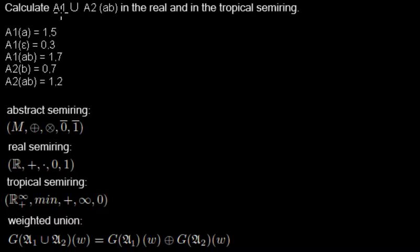In this video I'd like to show you how to calculate the weight of the word AB in the union of the two weighted automatons A1 and A2 in the real and in the tropical semi-ring, which are two different tasks actually, but I will handle them in one video and I will show them in different lines.